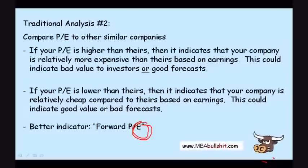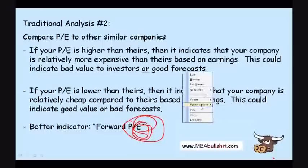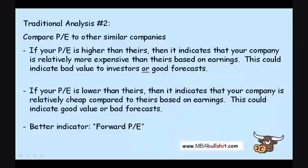Instead, it's based on next year's estimated future earnings. Of course, that's not yet certain, but it's based on an estimate. You find the future estimated earnings for next year, put it into the ratio, and you get what we call a Forward PE.